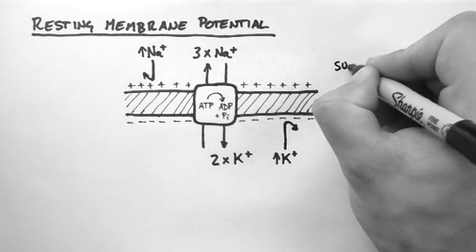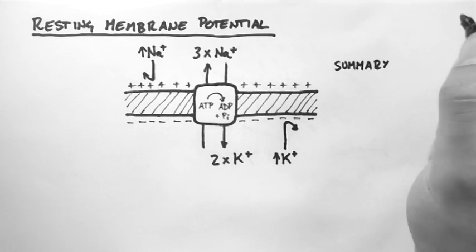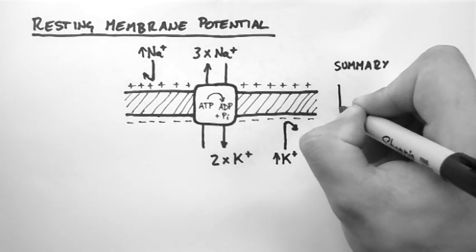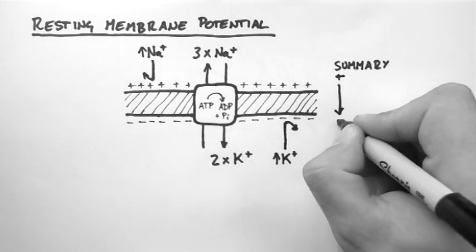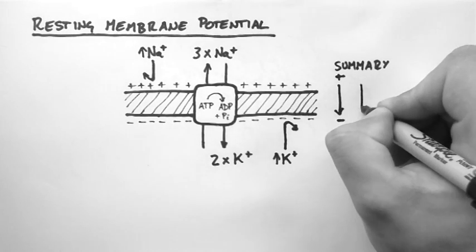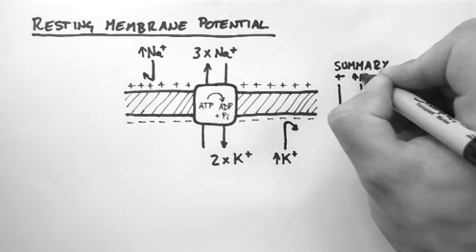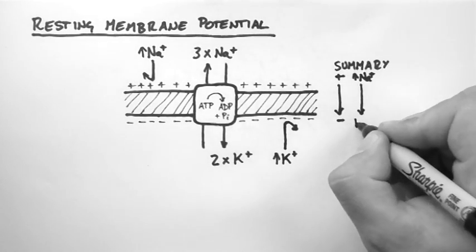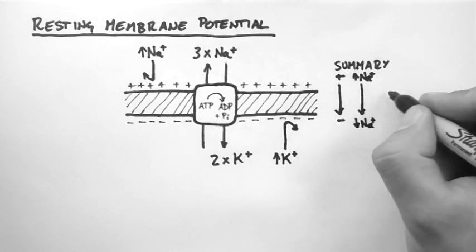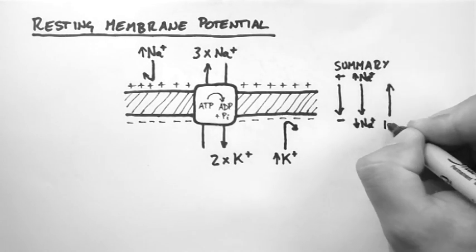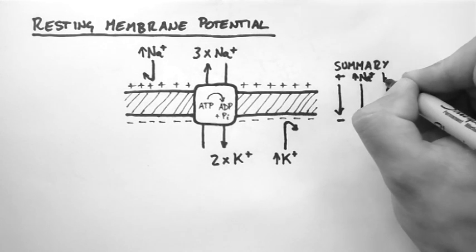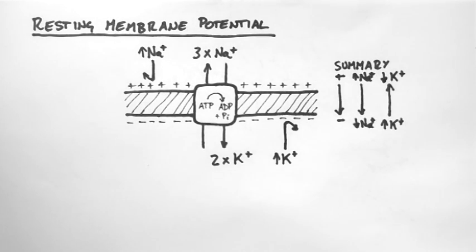In summary, there is a positive to negative gradient this way, and there is a high sodium to low sodium gradient also this way, and there is a high potassium to low potassium gradient the other way.